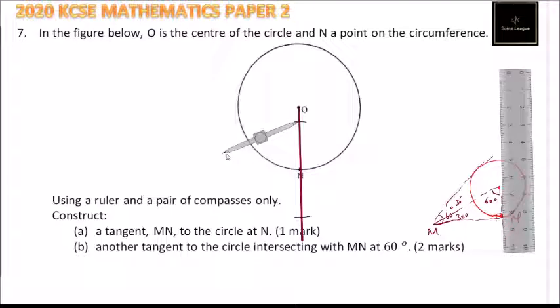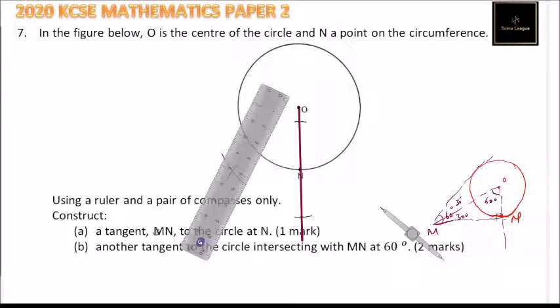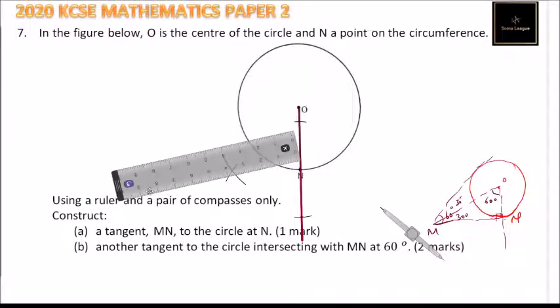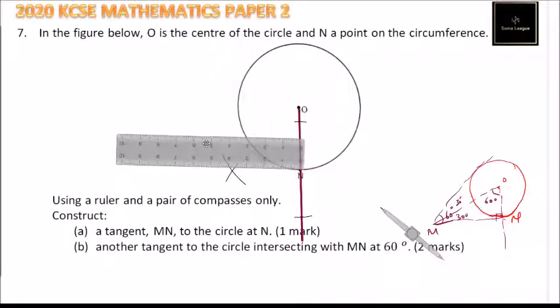We do that, then we have another mark here. With N and that mark there, we should be able to get a straight line. So what we do here is, we get the tangent now. We make that point.